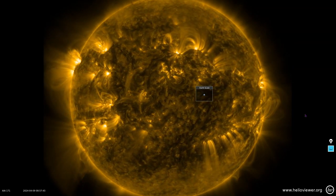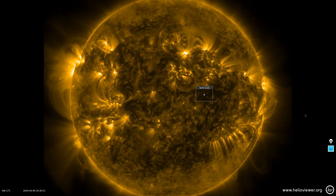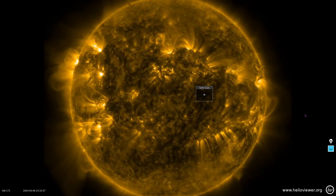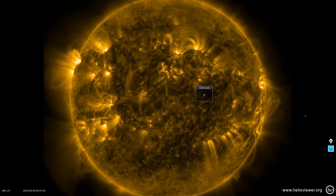Sunspot number has dropped below 60, but there are a lot of plasma filaments pointed right at Earth.